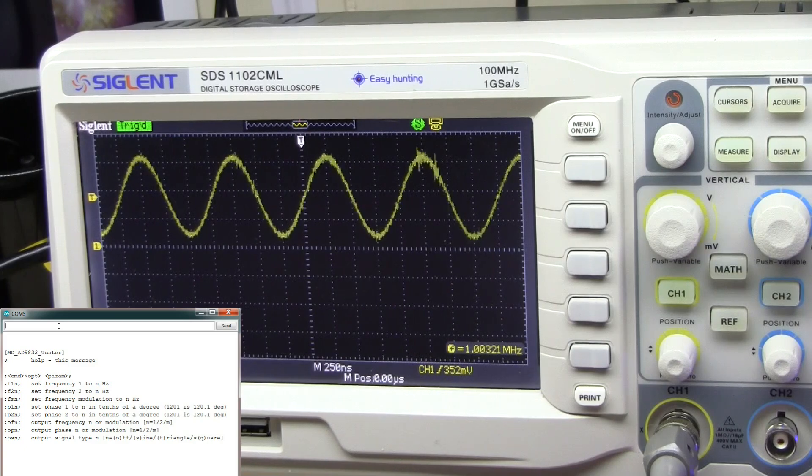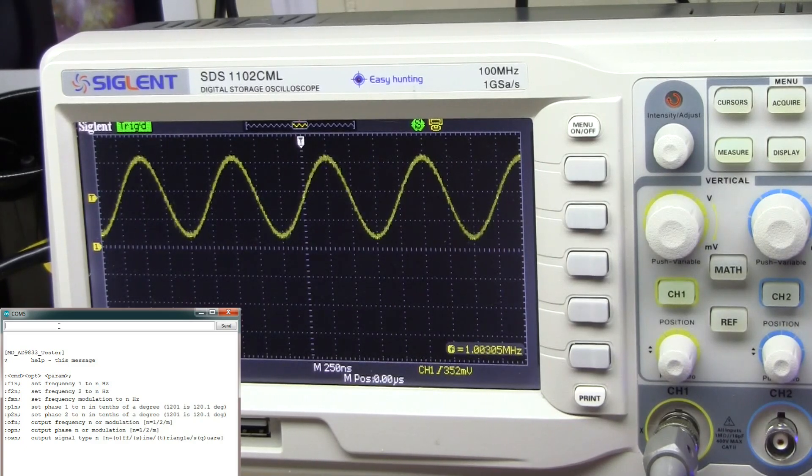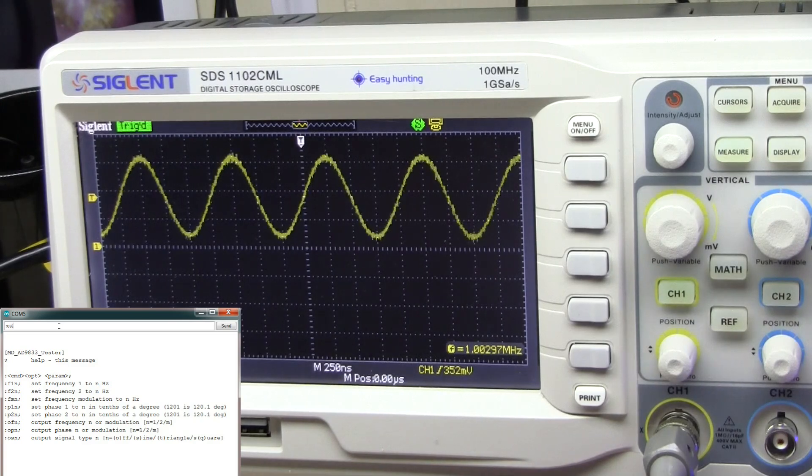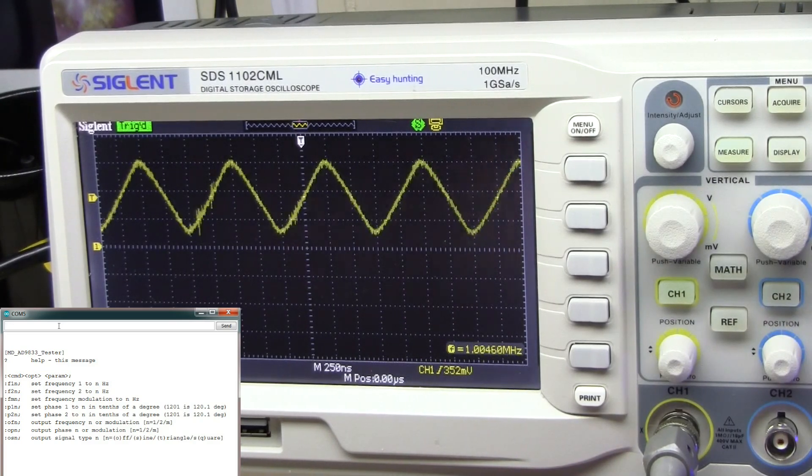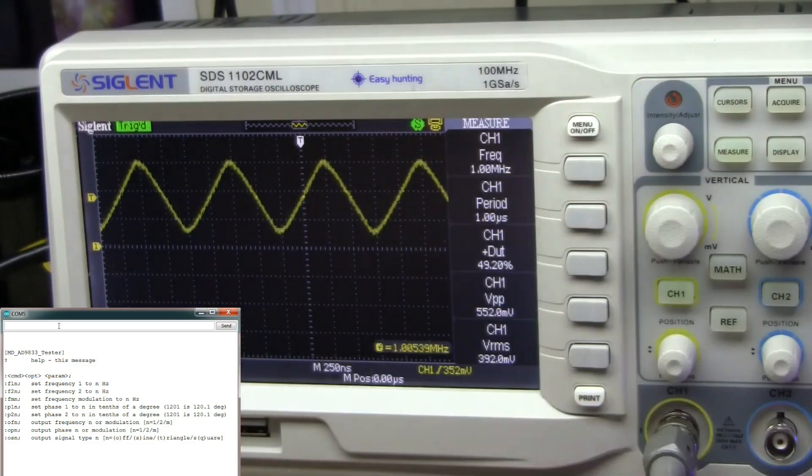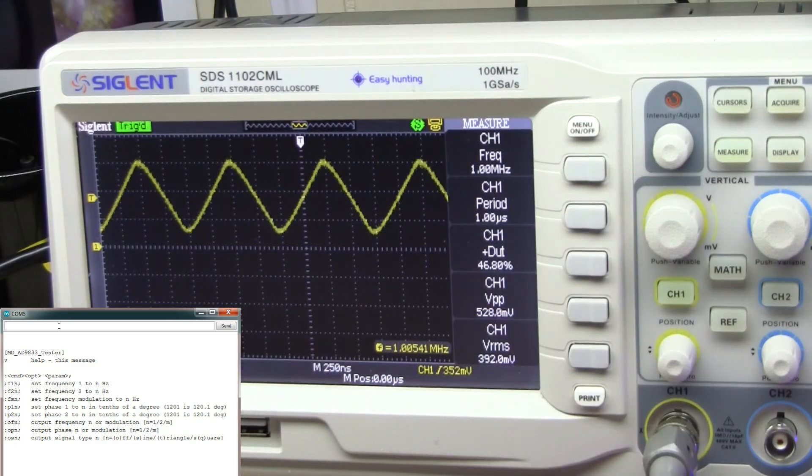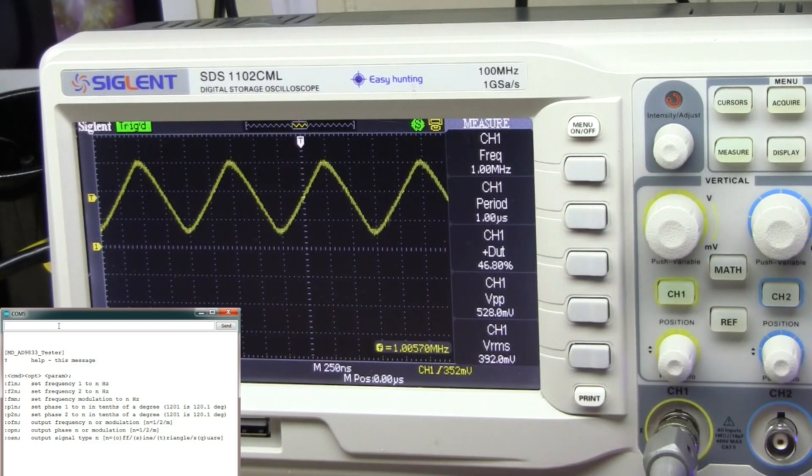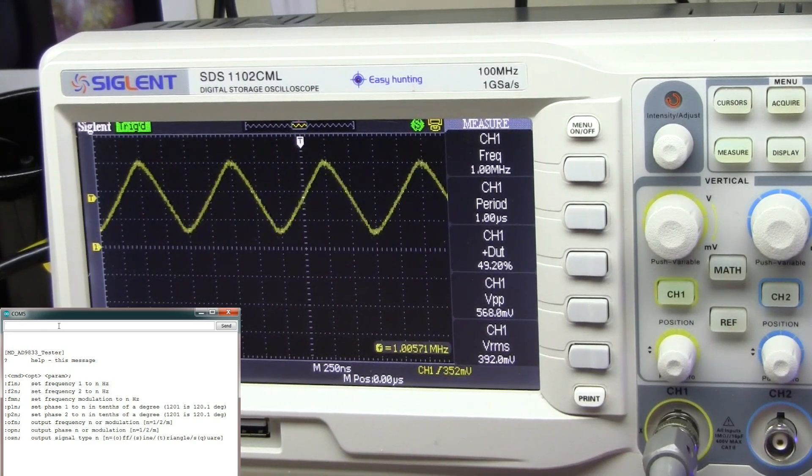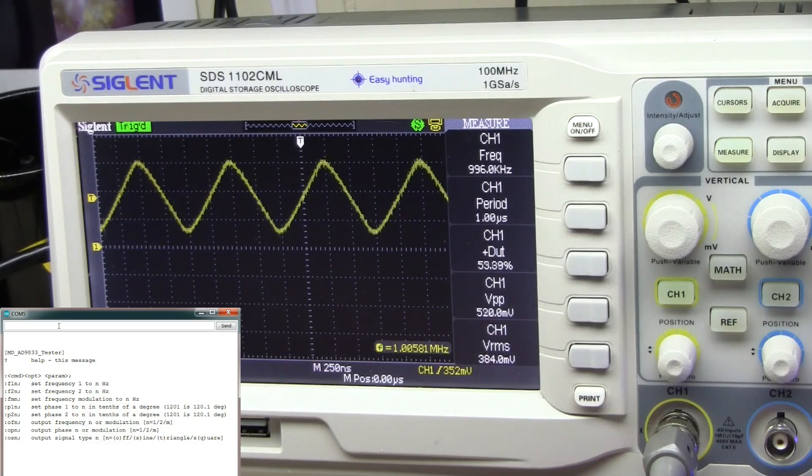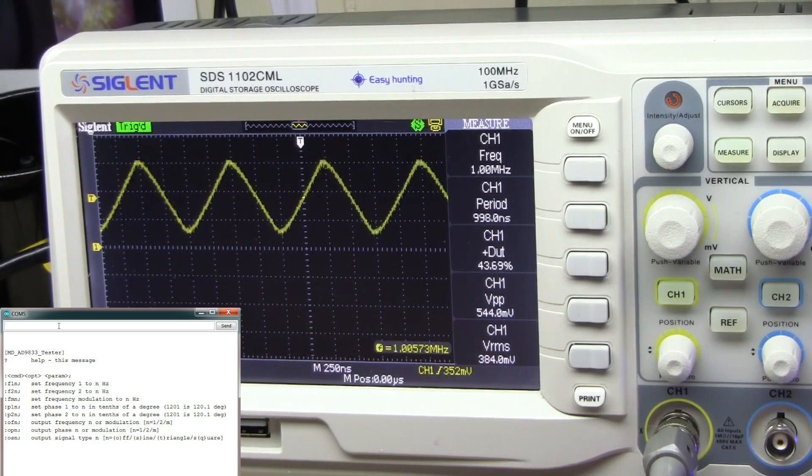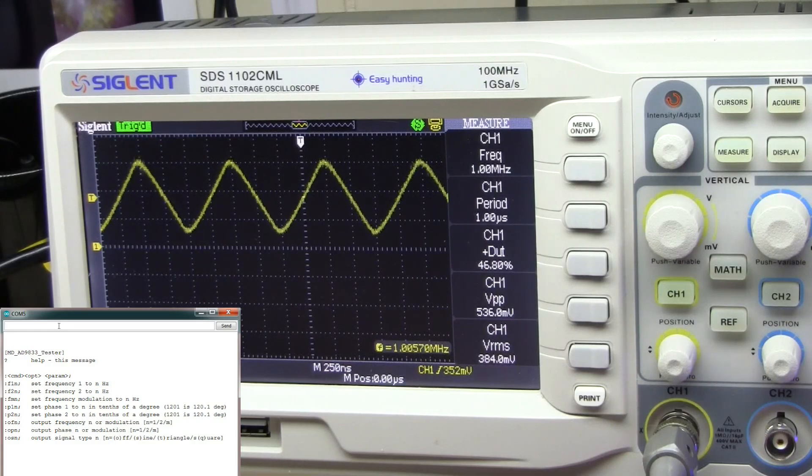Let's change it again to a triangle wave. Then we'll take a look at our measurements. Frequency is holding steady. Well, close to holding steady. It's actually dropping about 2%.